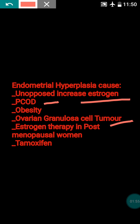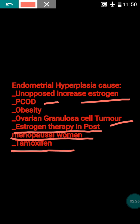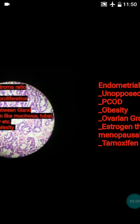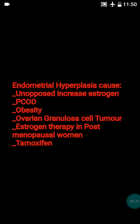Another reason is obesity. In obese patients, adipose tissue contains the enzyme aromatase, so more adipose tissue means more aromatase activity. This enzyme converts androstenedione into estrone, leading to endometrial hyperplasia. Additionally, in postmenopausal women receiving estrogen therapy, endometrial hyperplasia can develop. The drug tamoxifen, used in breast cancer, can also lead to endometrial hyperplasia.